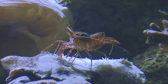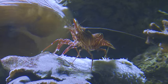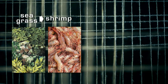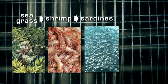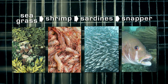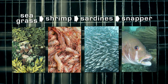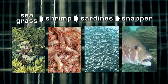An example of a marine food chain is when a shrimp eats seagrass, sardines eat the shrimp, and snapper eat the sardines.